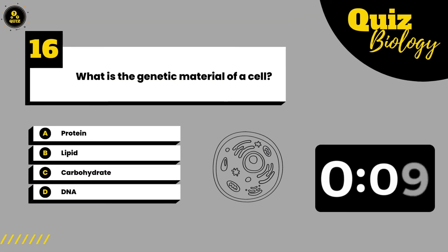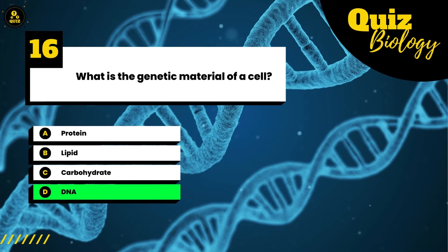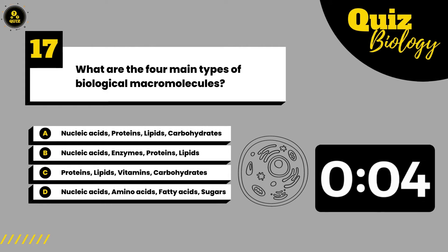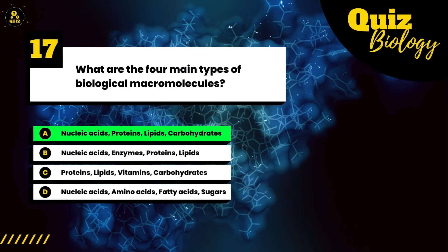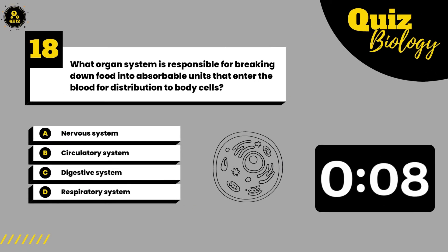What is the genetic material of a cell? What are the four main types of biological macromolecules? What organ system is responsible for breaking down food into absorbable units that enter the blood for distribution to body cells?